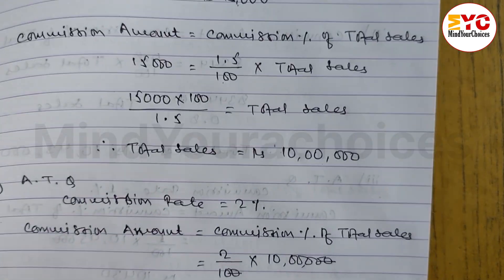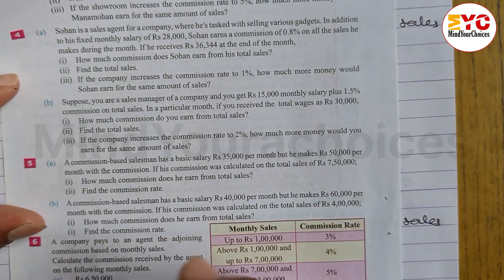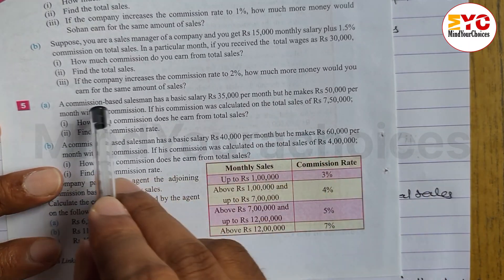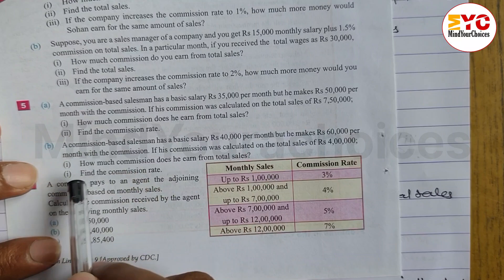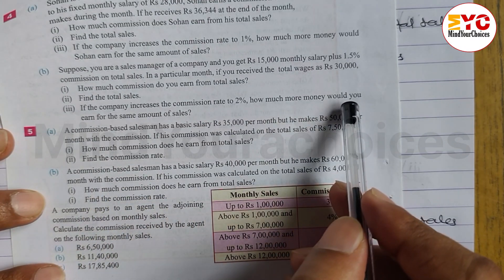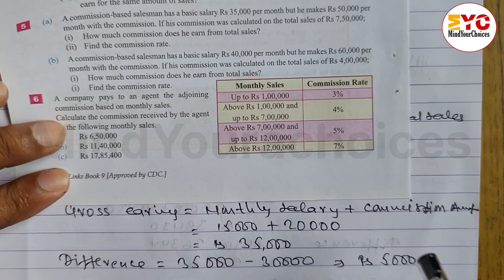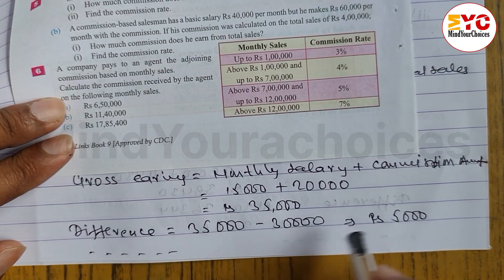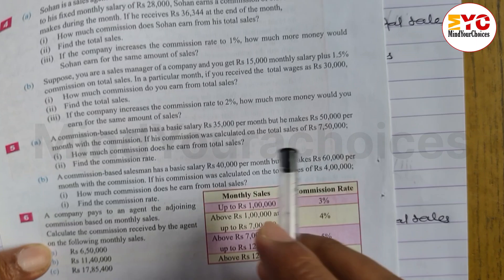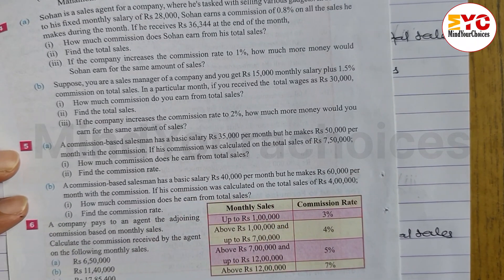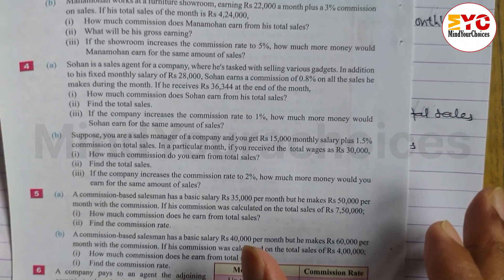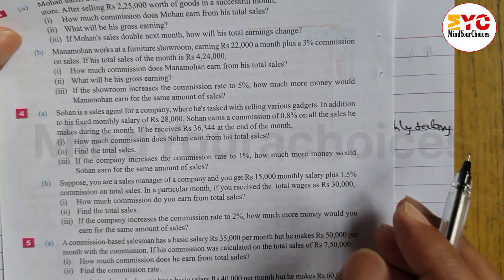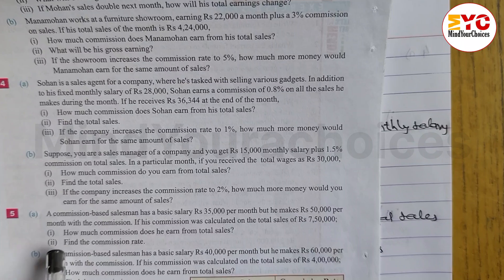Conclusion: I will earn Rs. 5,000 more when the commission rate increases to 2%. Hope you understand question number 4. In the next video, we will do question number 5.